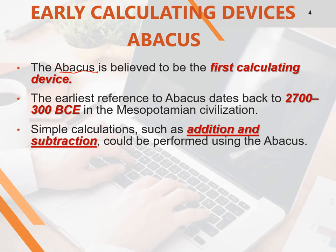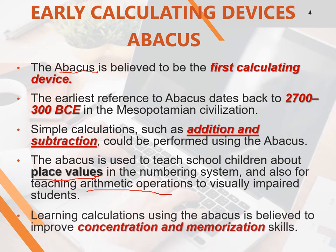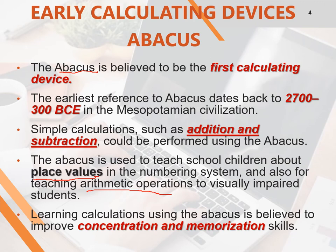Abacus is used to teach school children about place values in the numbering system and also for teaching arithmetic operations to visually impaired students — that means blind people. This Abacus device is very useful for those who cannot see, to help them learn arithmetic operations. Learning calculations using the Abacus is believed to improve concentration and memorization skills.